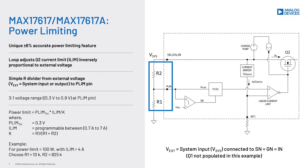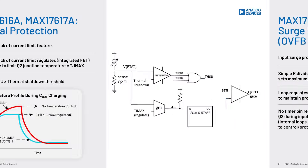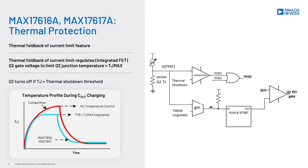Protections include over and undervoltage, overcurrent, power limit, reverse protection, and loss of ground. All four variations provide a wide capability of responses to these conditions, including disconnection and regulation.